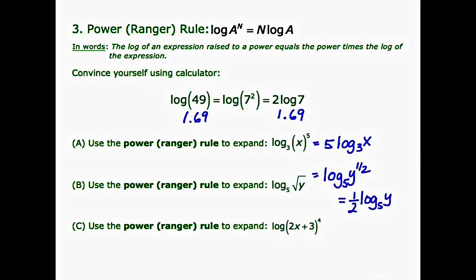For our final example, example C: use the power rule to expand the log of (2x plus 3) to the power of 4. There's no base written, so it's an implied base of 10. The power of 4 leaps down in front and our final answer is 4 log of (2x plus 3). On this slide and the three before it, we discussed the three properties of logs: the product rule, the quotient rule, and the power ranger rule. These properties will be particularly useful as we study different solving techniques in subsequent videos.